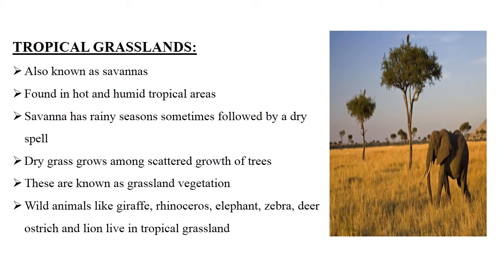Wild animals like giraffe, rhinoceros, elephant, zebra, deer, ostrich, and lion live in tropical grassland.